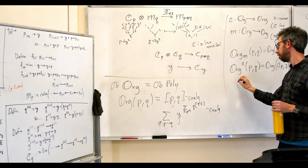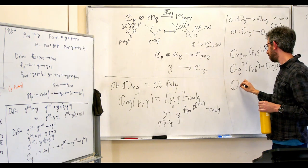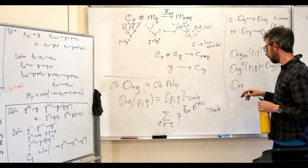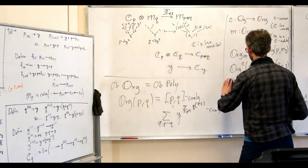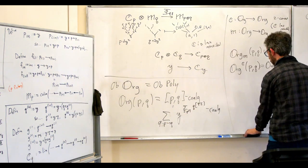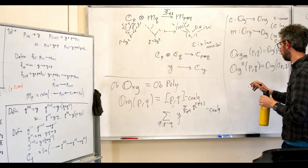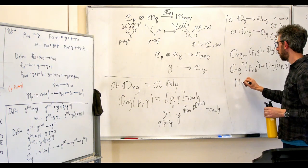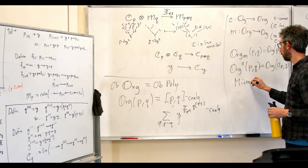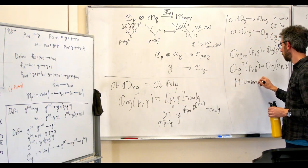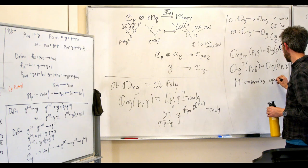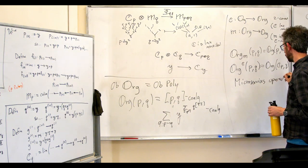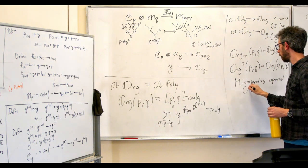It turns out c is a functor from Org to Org — a two-comonad — using c's lax monoidality. And m is a functor from Org to Org — a two-monad — using the fact that m is a c-module with those extra comonad-monad interaction diagrams. We can then form the Kleisli category Org_m and the co-Kleisli category Org_c. We're ready to define the microservices operad.